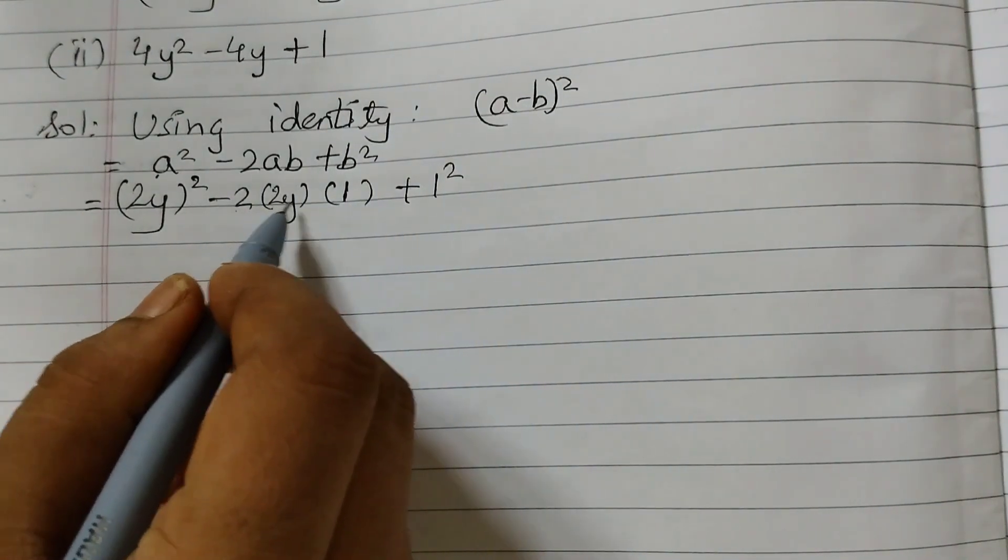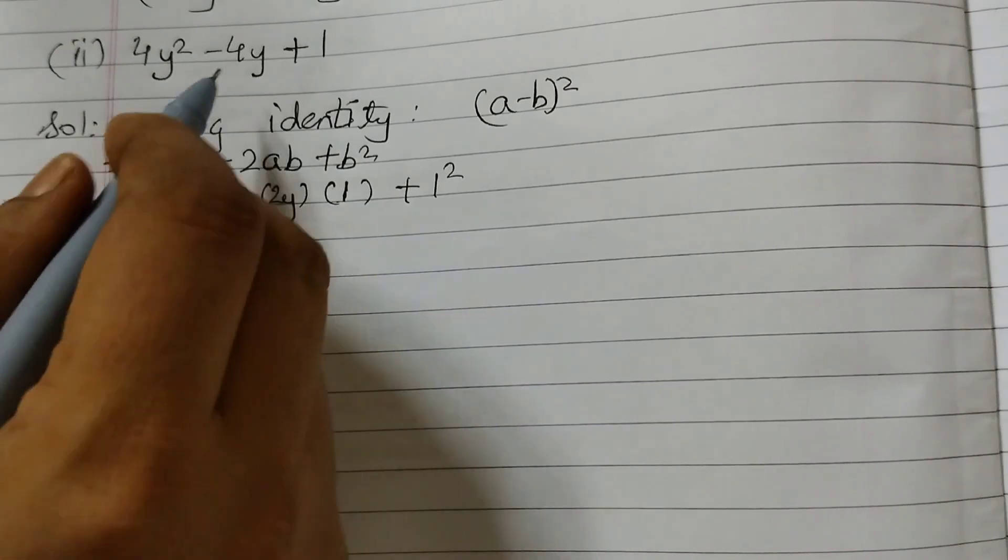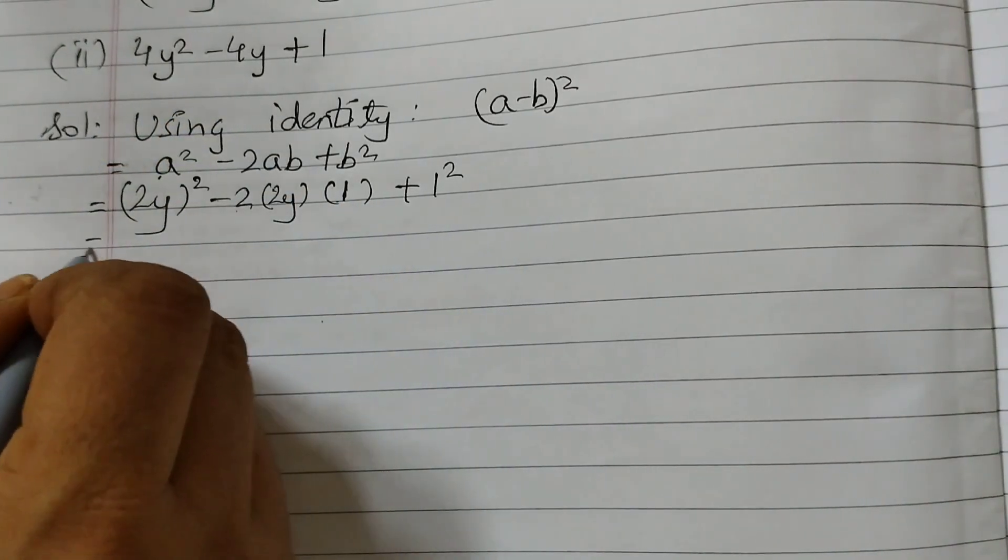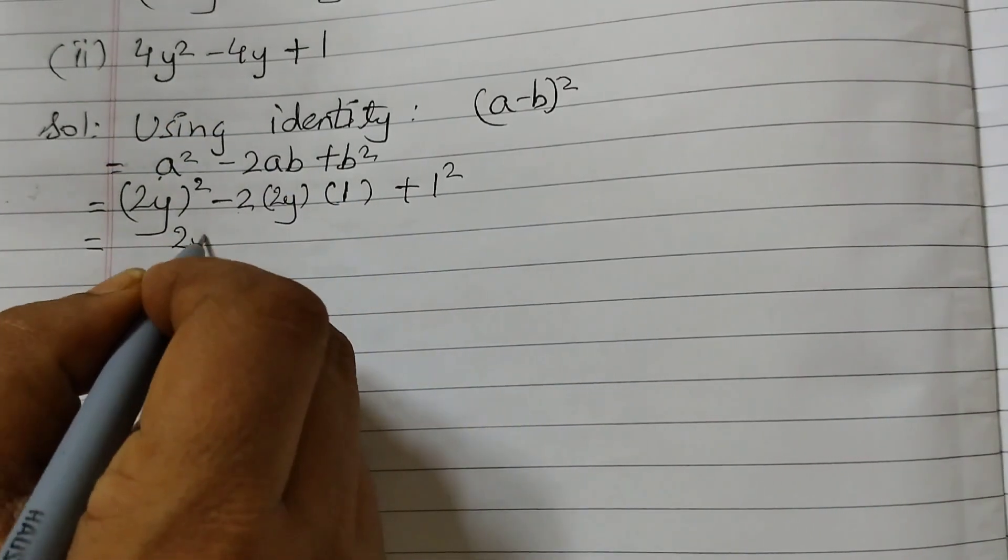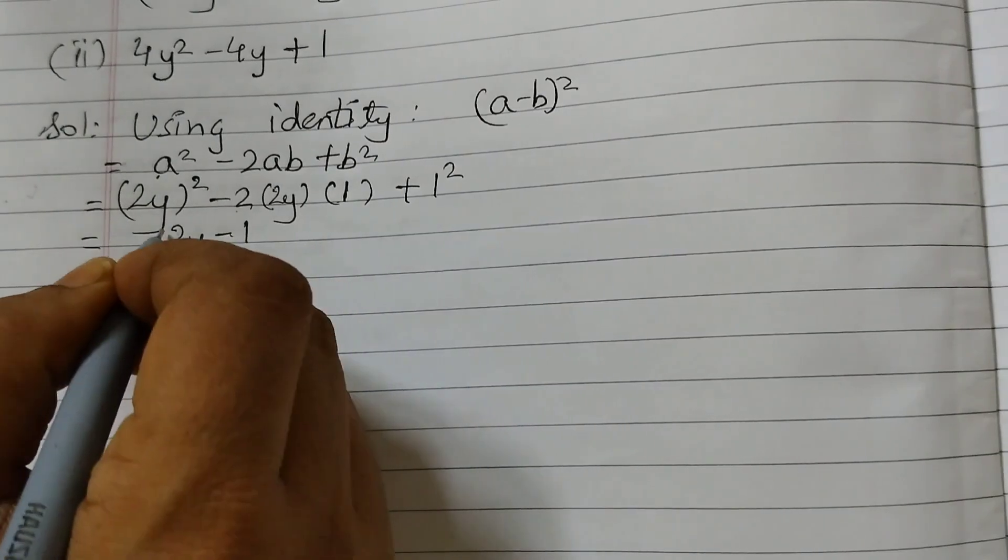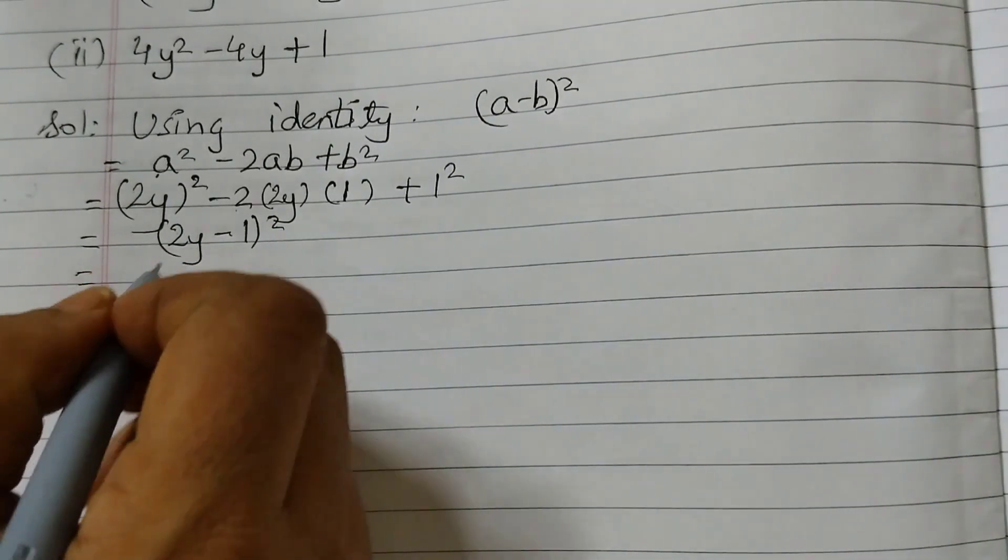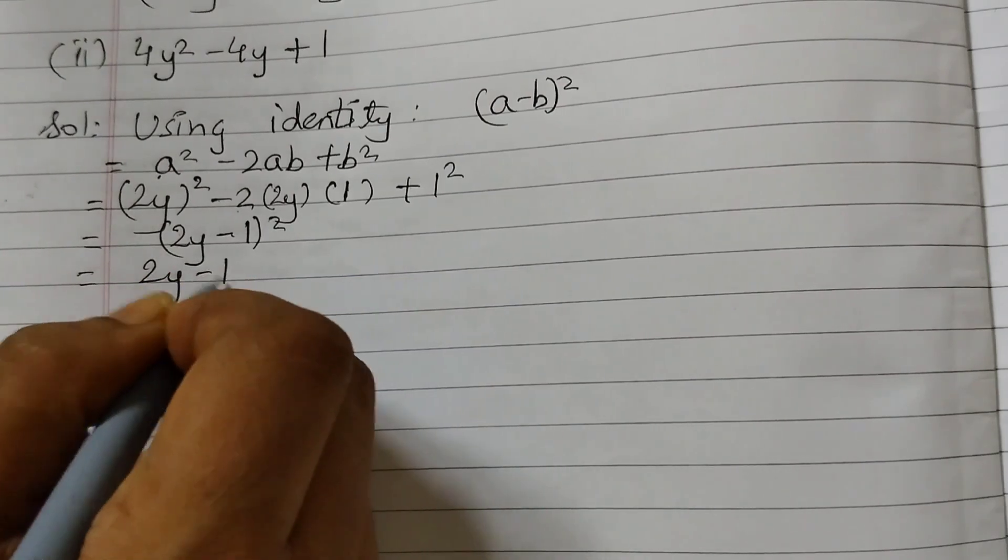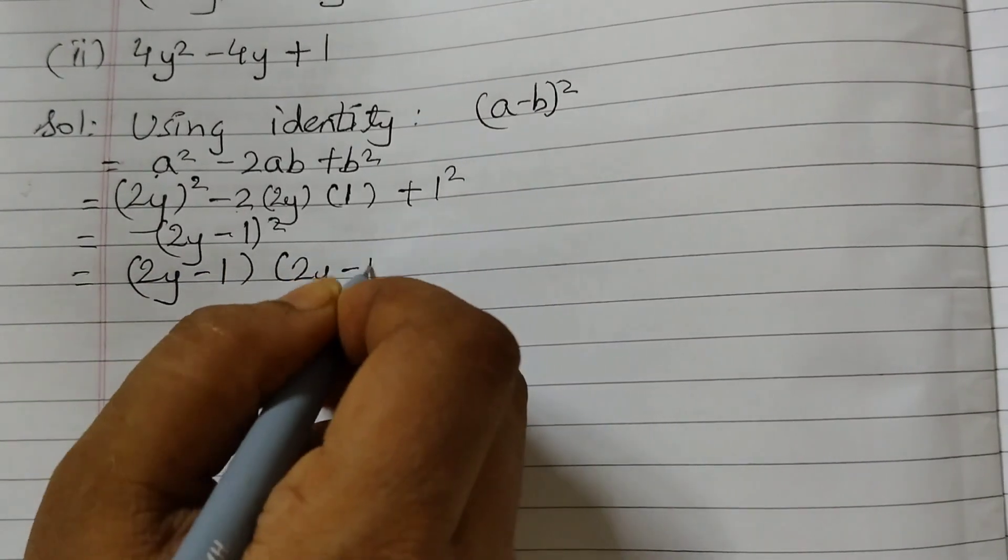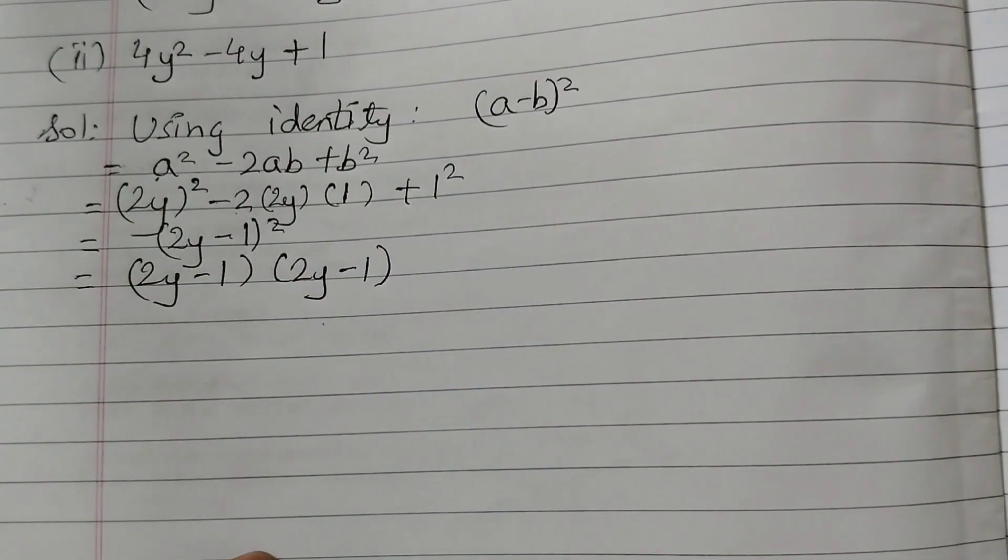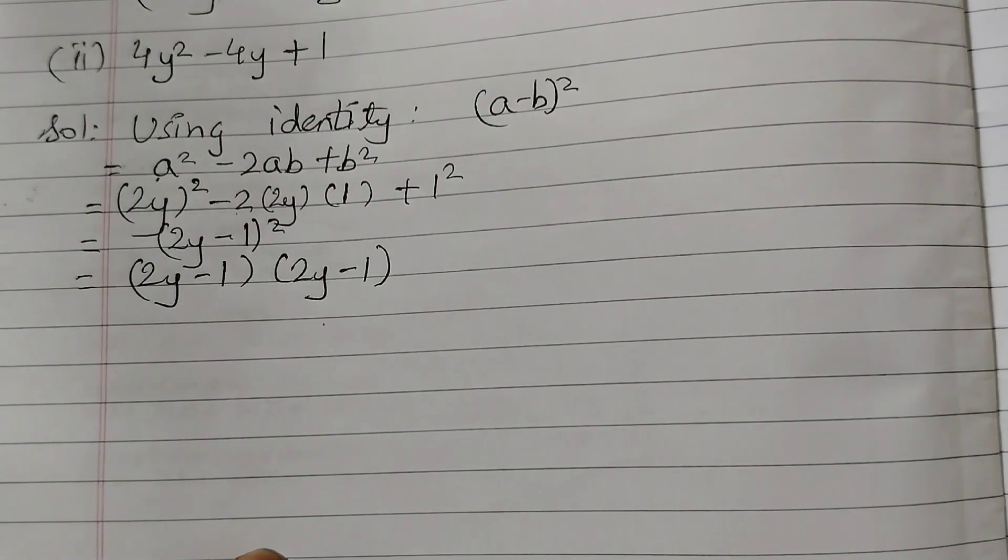We can check: 2 times 2 is 4, 4 times 1 is 4, so 4y. This equals to 2y minus 1 the whole squared. We got it in this form. And we will just write it twice now: 2y minus 1 into 2y minus 1. And this is your answer for the second one.